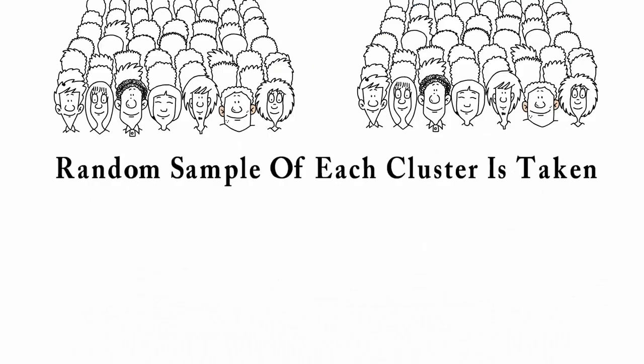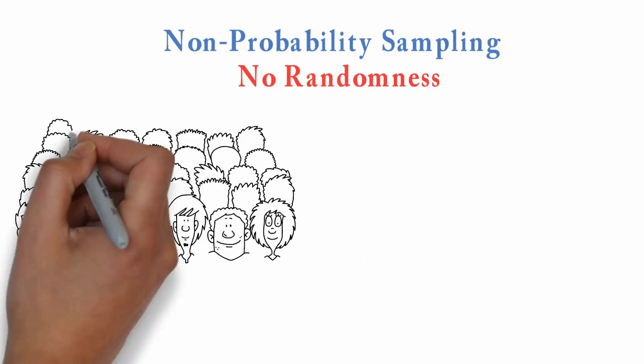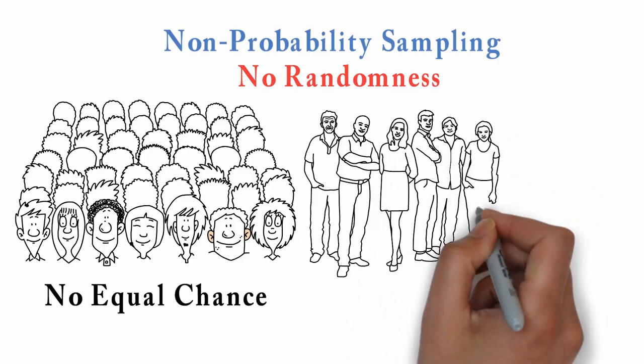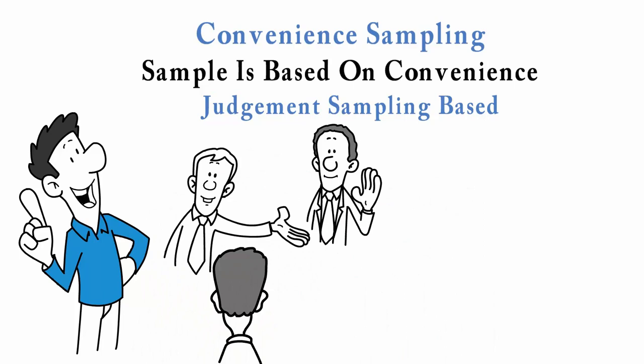In non-probability sampling, there is no randomness in selecting members of the sample. Members of the population do not have an equal chance of selection into the sample. This gives a rough idea about the population but cannot be used to draw conclusions about the entire population. The methods include convenience sampling where the sample is based on convenience. Other methods are judgment sampling based on your own judgment and voluntary sampling where individuals are requested to volunteer and participate in the survey.